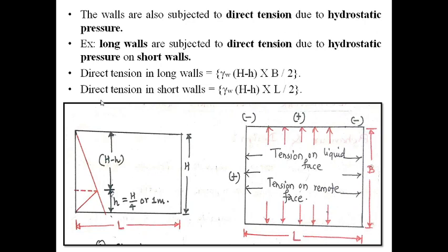Similarly, the direct tension in short walls follows the same formula, only B is replaced by L. Because of the pressure on the long wall, there will be tension in the short wall, and therefore it is γw × (H − H') × L / 2.